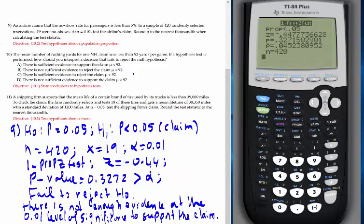Number ten. The mean number of rushing yards for one NFL team was less than 92 yards per game. If a hypothesis test is performed, how should you interpret a decision that fails to reject the null hypothesis? H0: mean equals 92, HA: mean less than 92, claim is in HA. You fail to reject H0, claim is in the alternative hypothesis, so you say I cannot support the claim. Answer D: there is not sufficient evidence to support the claim.